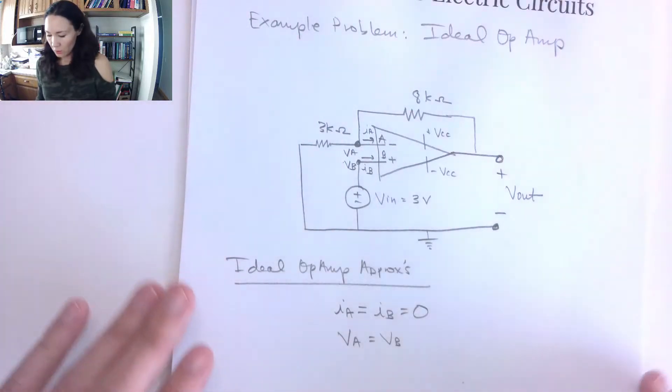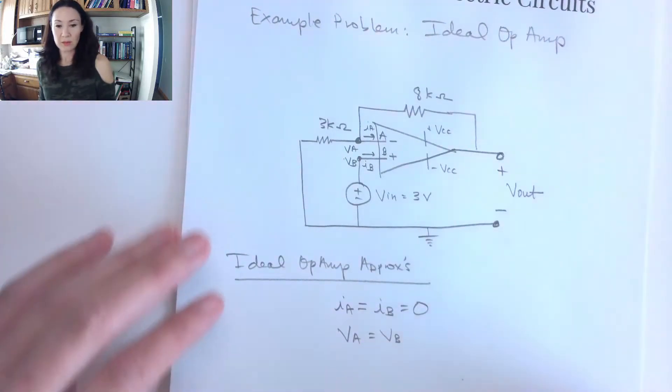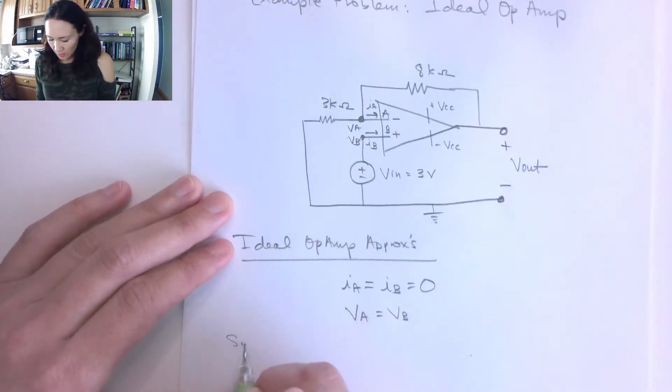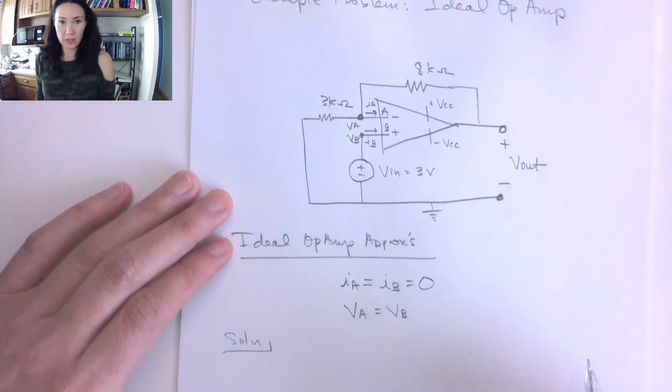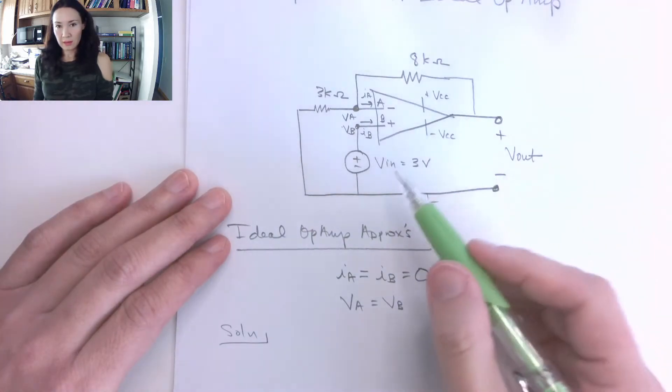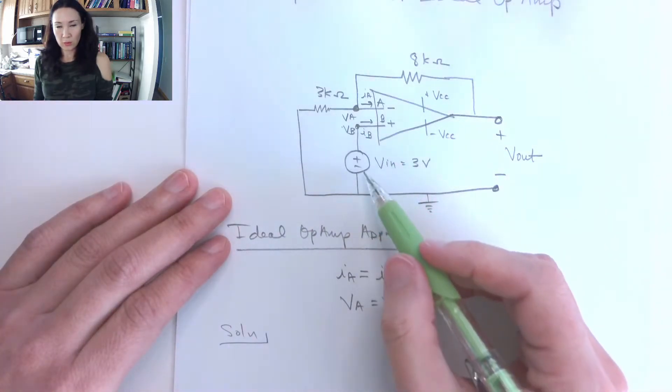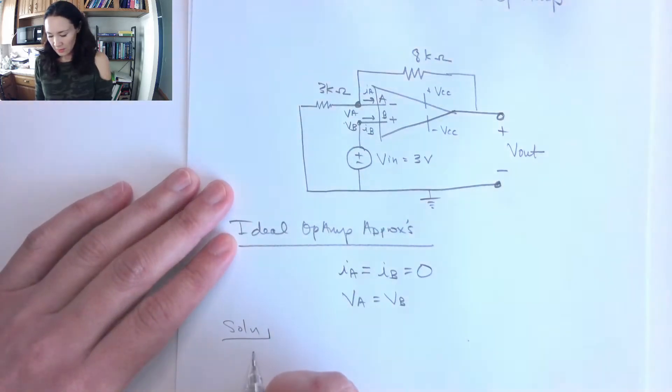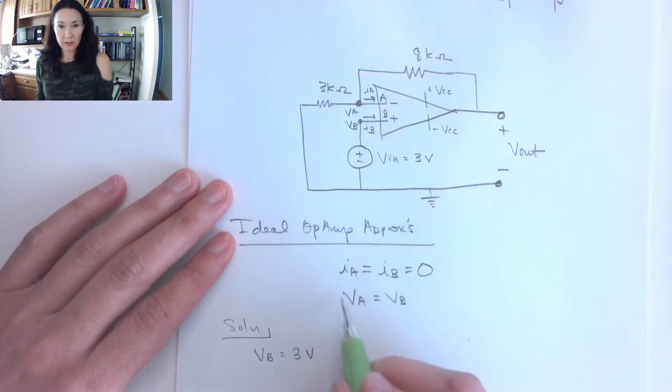So now we are ready to solve our first op-amp circuit in this module. So let me write out this solution for you. We have that VB is equal to what? Well, it's connected directly to this 3-volt source, so that means that VB is equal to 3 volts, and because of our ideal op-amp approximation, this implies that VA is also equal to 3 volts.